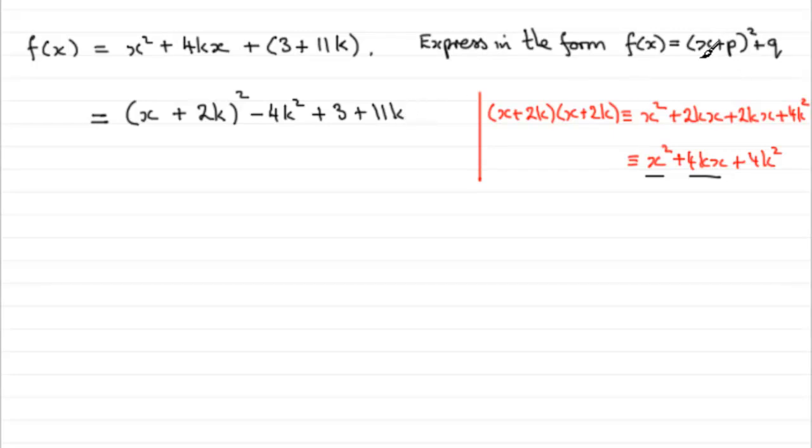Now, you can see I'm gradually getting towards this particular format. I've got my x plus p term all squared. It's x plus 2k all squared. Then, for this one, I've got to have plus q, so being a plus sign, I'm going to put a plus there and set up some brackets to create one term, the q.